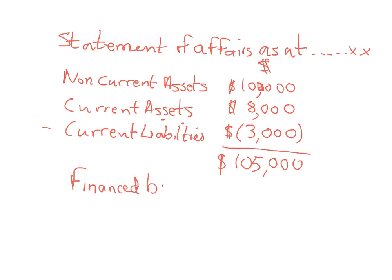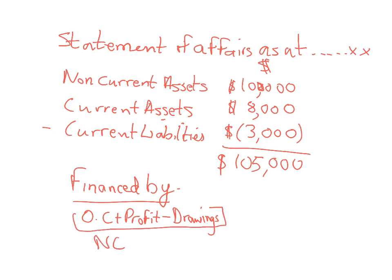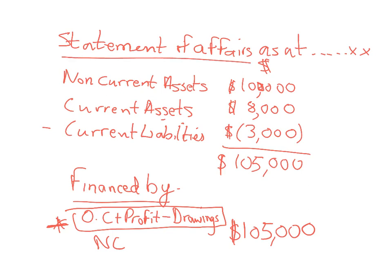Normally, as a sole trader, the balance sheet would be financed by opening capital plus any profit minus any drawings. Unfortunately we don't know that information because it's incomplete. So we work out the new capital using that formula, but we simply assume the top half is correct. Because we can't verify it, we call it a statement of affairs, and we assume that $105,000 is the correct new capital to carry into our accounts for next year.